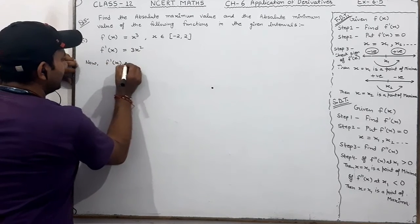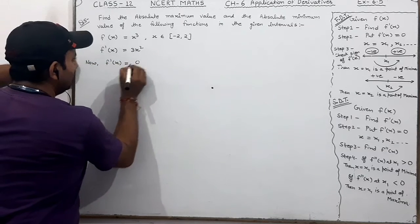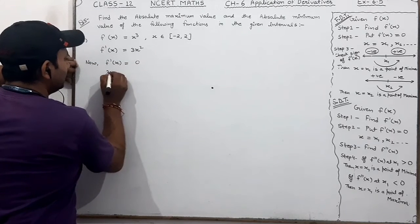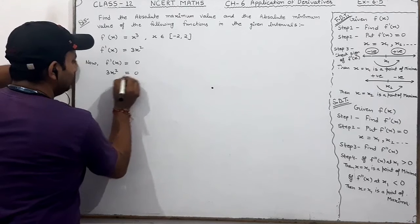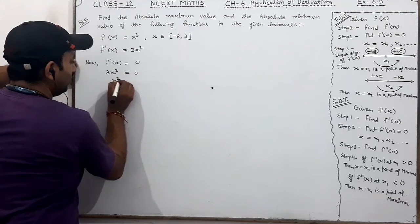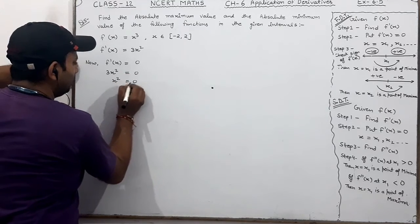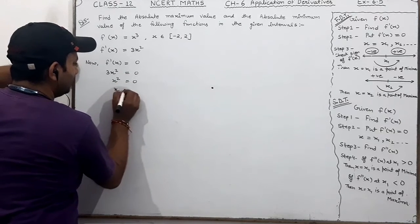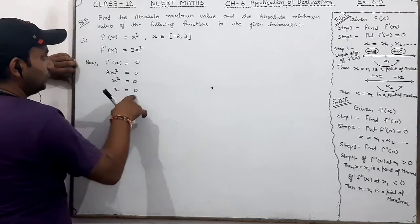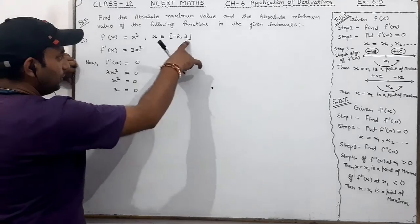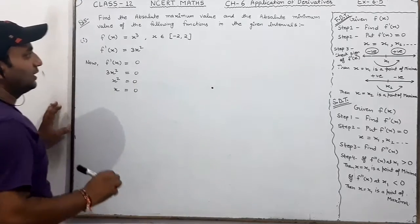Critical point: 3x² = 0, so x² = 0, and x = 0. Zero lies within the interval, between the two endpoints. Okay?